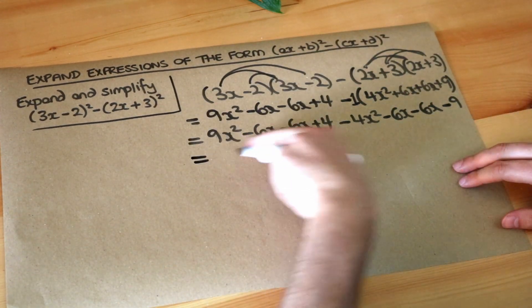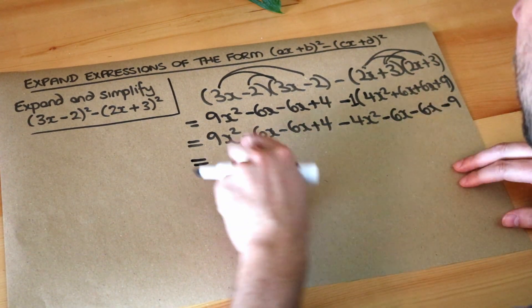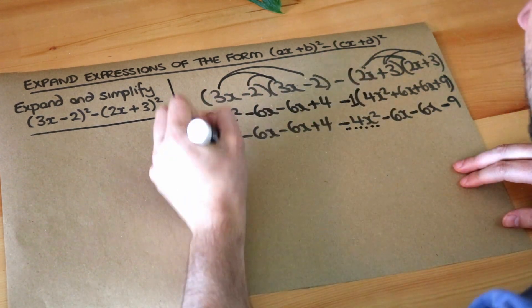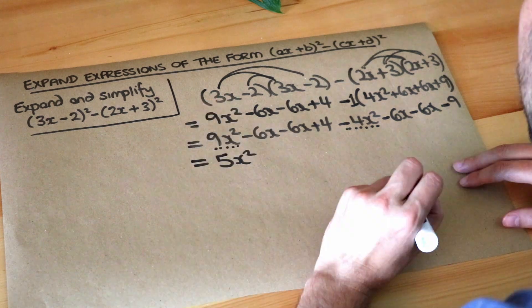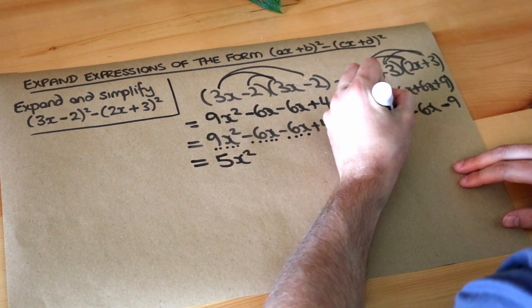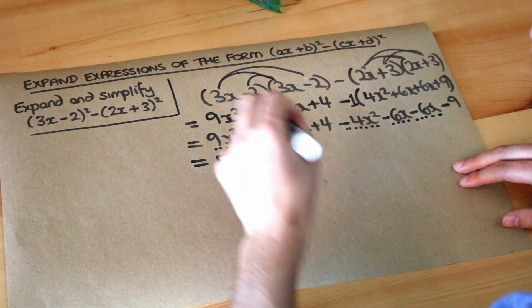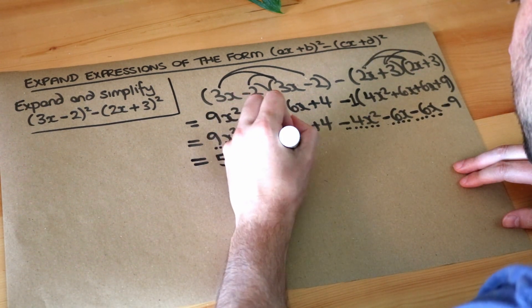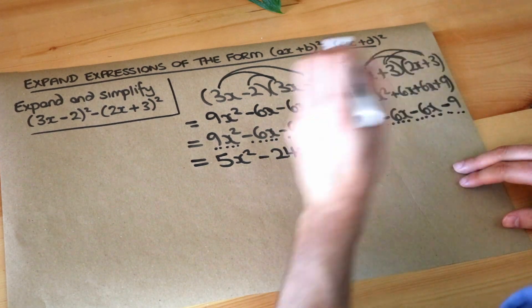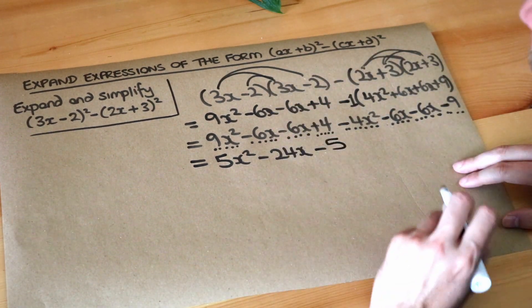And at this stage we just need to collect like terms. So we've got 9x² minus 4 lots of x², that's 5 lots of x². We've got -6x minus another lot of 6x minus another lot of 6x minus another lot of 6x, that's -24x. And we've finally got 4 subtract 9, that's -5. And that's the final answer.